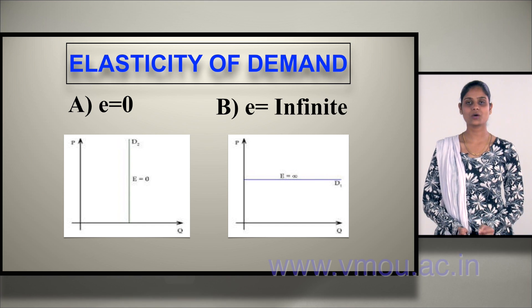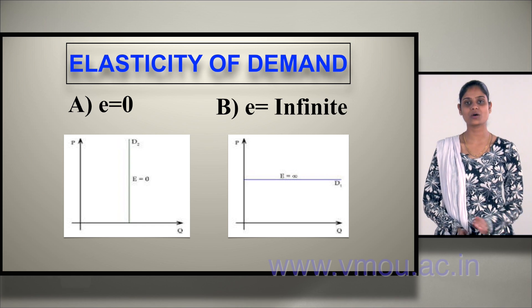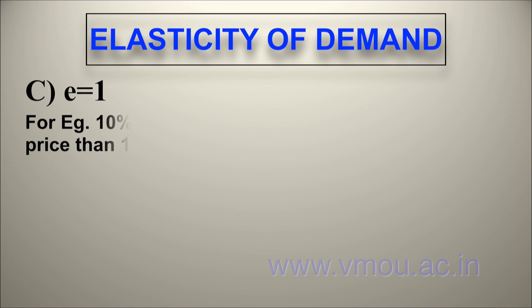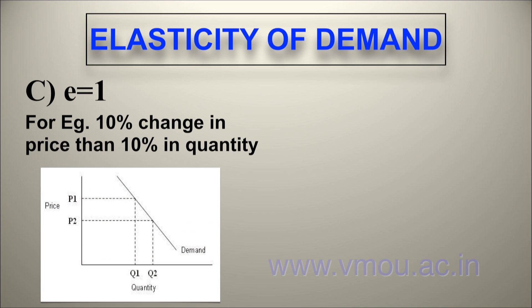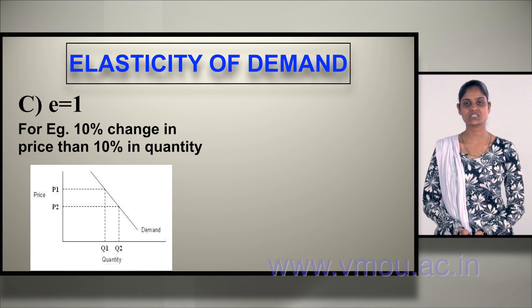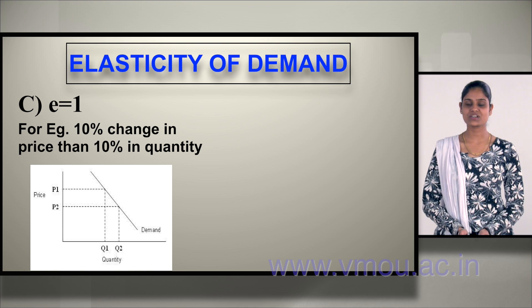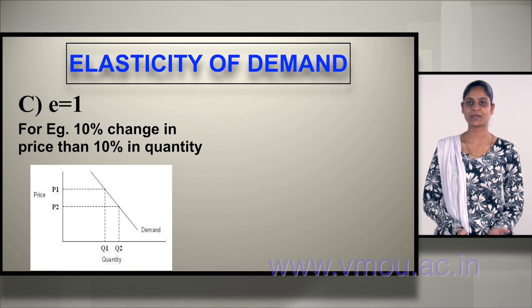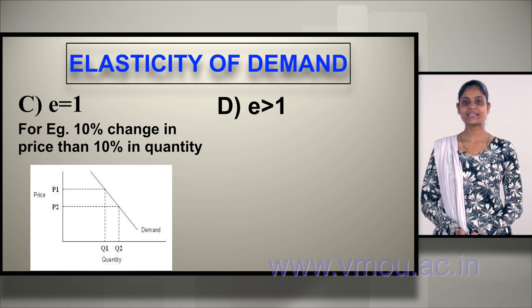For e equals infinite, for example, if your price is 10 you are consuming 10 units, and then you consume 20 units — price is constant but quantity demanded fluctuates. E equals one means if your price increases or decreases by 10 percent, the quantity also changes in the same proportionate ratio — if price changes 10 percent, quantity also changes 10 percent; if price changes 5 percent, quantity changes 5 percent.